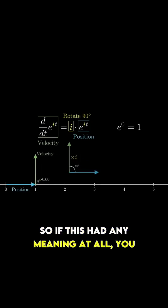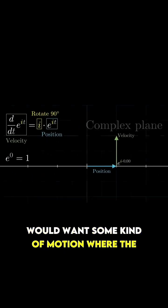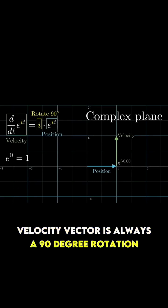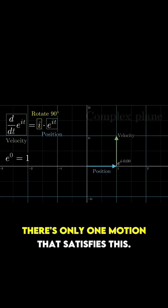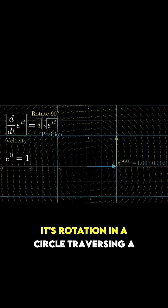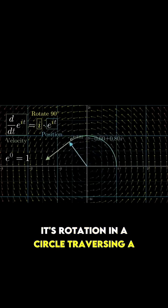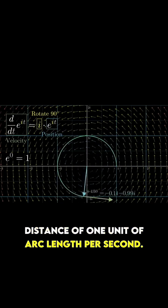So if this had any meaning at all, you would want some kind of motion where the velocity vector is always a 90 degree rotation of the position vector. There's only one motion that satisfies this. It's rotation in a circle, traversing a distance of one unit of arc length per second.